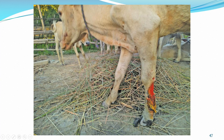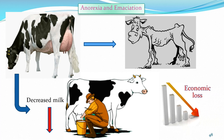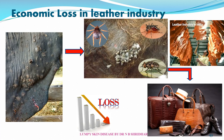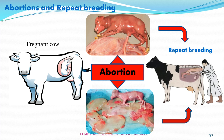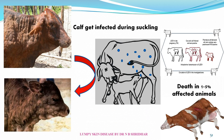Animals suffer from severe anorexia and cachexia, with drastic reduction in milk yield causing severe economic loss — up to 10 percent of milk yield is lost. Economic loss to the hide and leather industry is also significant due to skin damage. Abortions and repeat breeding are common. Pregnant animals at any stage may abort. Calves may get infected during suckling, and the mortality rate in affected animals is 1 to 5 percent.